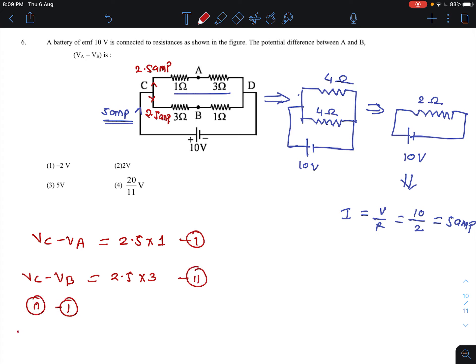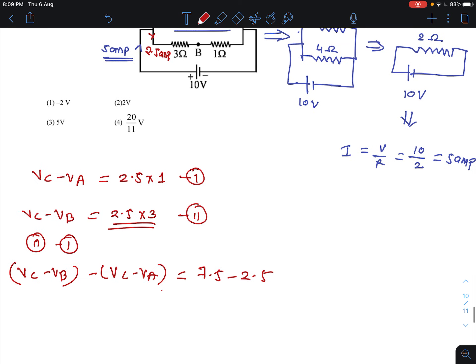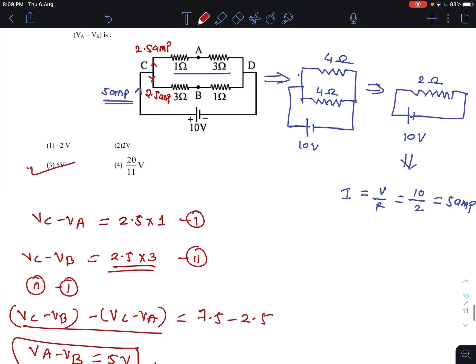We will do 2 minus 1. VC minus VB minus VC minus VA equals 7.5 minus 2.5. If you solve this, you will get VA minus VB is equals to 5 volt. And this will be our answer. So option C. Thank you.